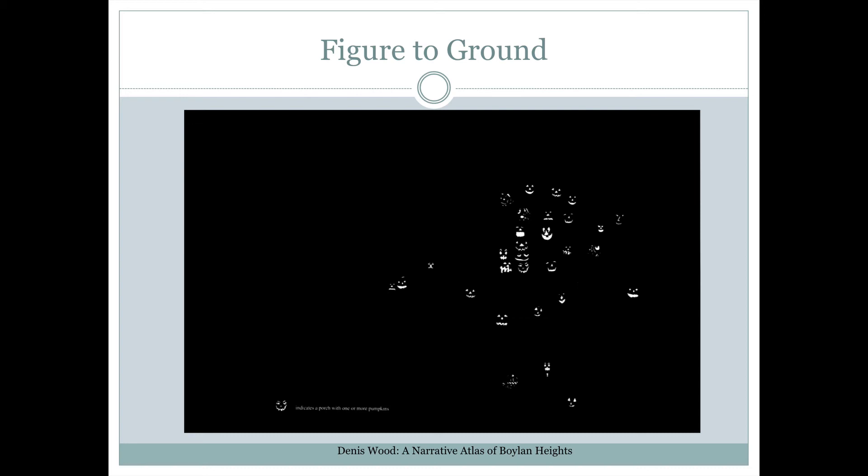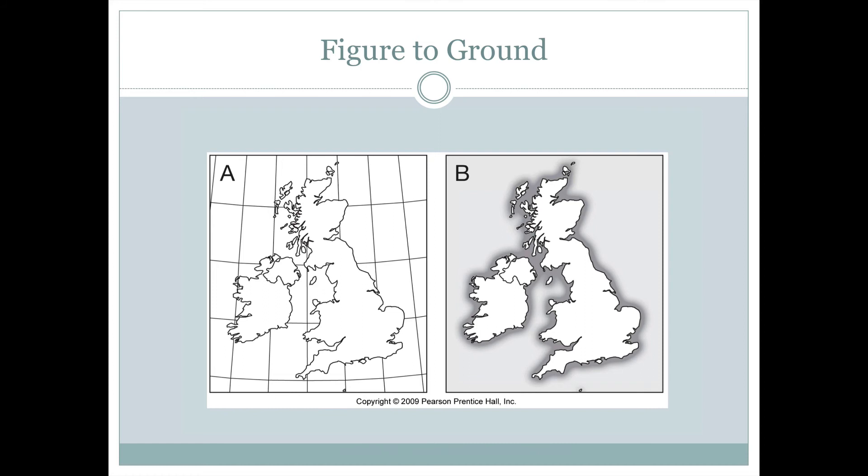Oftentimes on a map, we want the figure to stand out from the ground. So in this example here, showing the United Kingdoms and Ireland, we do this in two different ways. On the left-hand side, in figure A, what they've done is they've made the figure stand out more on the map, Ireland and the UK, by not continuing the lines of longitude and latitude through the land areas of Ireland and the UK.